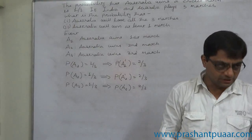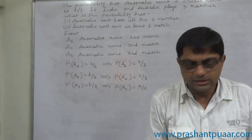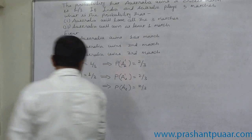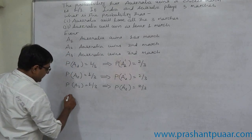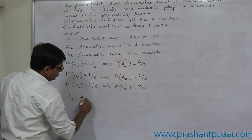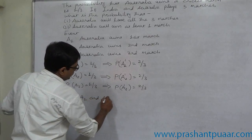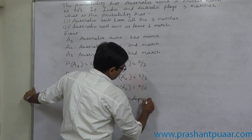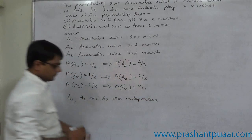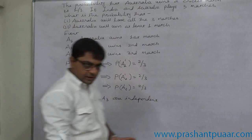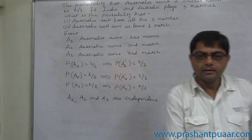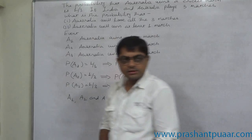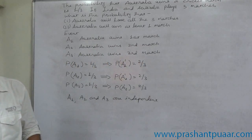It is not necessary that any team who wins the first match is going to win all the other 2 matches. So all 3 matches are independent events — that means A1, A2, and A3 are independent. The effect of independence is that the intersection of any 2 or 3 events will be just the multiplication of the respective probabilities.